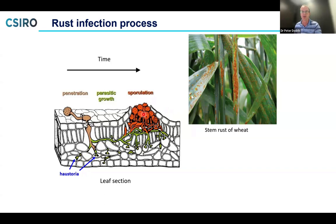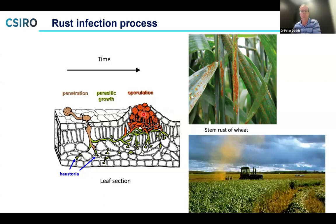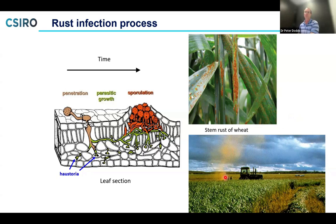To give you an idea of the scale of infection and spore production: this is an image of an infected wheat field, and what you see behind the tractor is an orange cloud — the spores being released from infected plants as the tractor drives through. It generates enormous amounts of spores that are windborne and can spread massive distances, producing substantial epidemics that can erupt across a wide region very quickly.